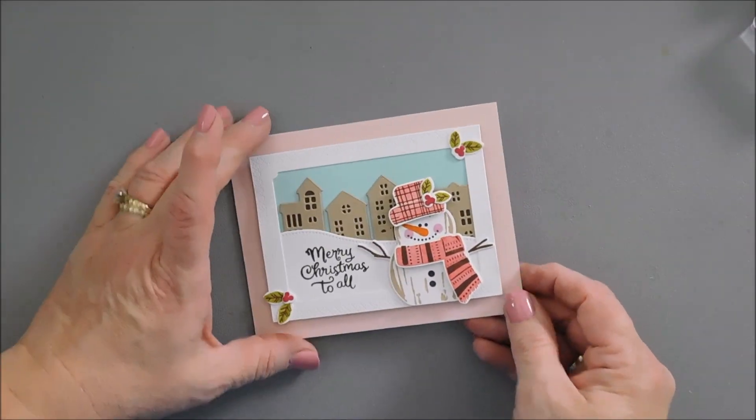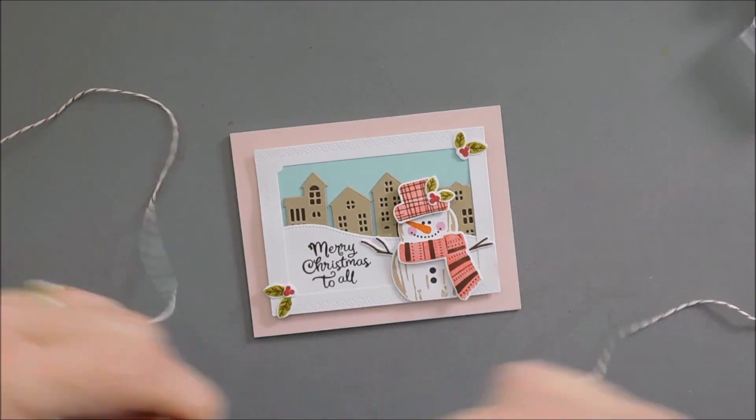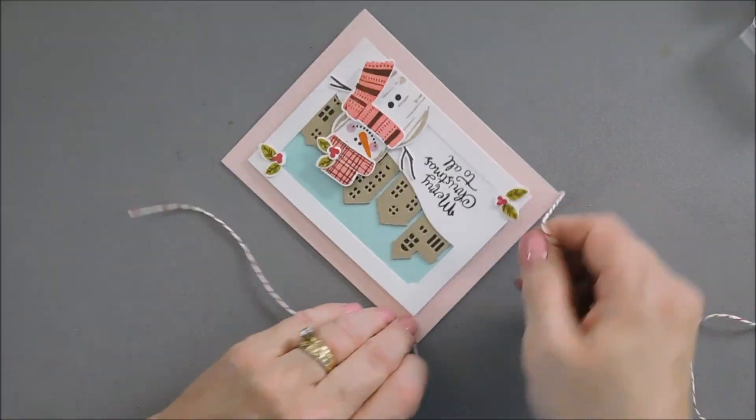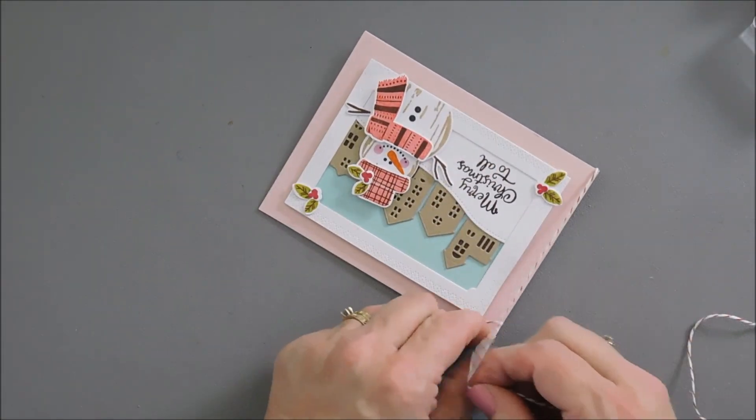I'm going to add a little bit of texture to my card. I'm going to bring in some Baker's twine here and thread it through the side of my card. We'll just tie a bow up here at the top.